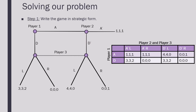We're first going to write this game in an induced strategic form. In this case, player one is our row player and player two and player three are our column players. Our first payoff is going to be that of player one, and our second two payoffs are going to be that of player two and player three.